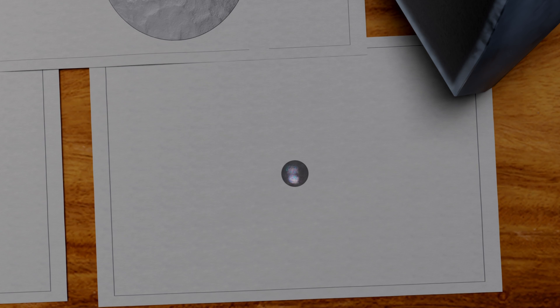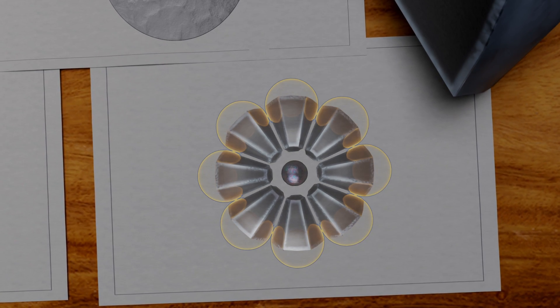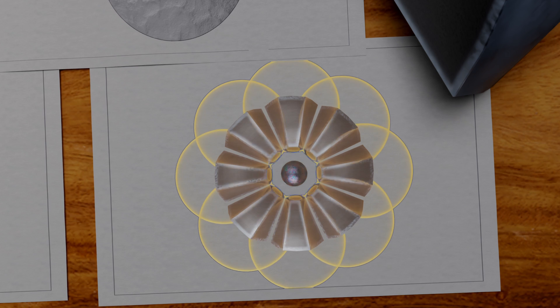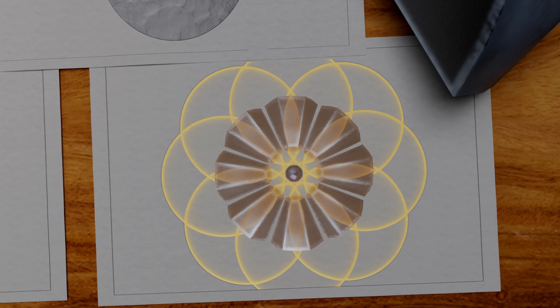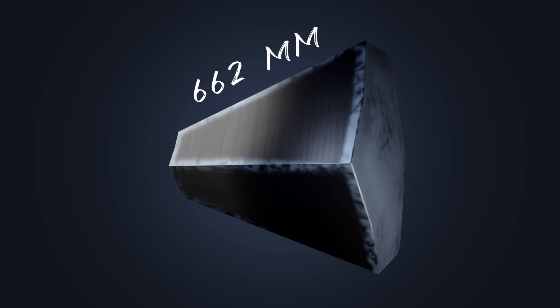To achieve supercritical mass of plutonium, explosives are placed around the plutonium and triggered. The explosion compresses the plutonium and makes it supercritical. Each block is 662 millimeters in length and weighed nearly 75 kilograms.